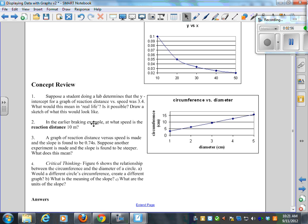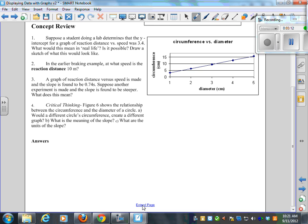Now did I give you the answer to number one? Should I review that again? I think maybe we should. So suppose a student is doing a lab that determines that the y-intercept for a graph reaction distance versus speed was 3.4. What would this mean in real life? I've got reaction distance versus speed, and I've got a y-intercept of 3.4. Craig, what does the y-intercept refer to? Where the line does what?